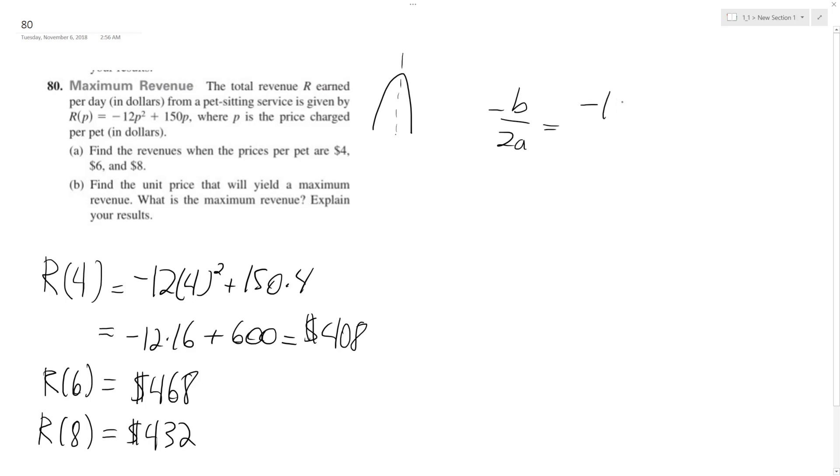Our B is going to be one negative, it's going to be 150, so negative 150 over 2 times negative 12, we get negative 150 over negative 24, and what does that give us? I think it's 6.25, or something, yeah.